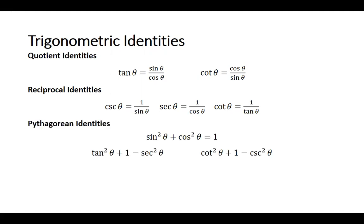The Pythagorean identities — I showed these to you and showed you how they work. The most common one: sine squared theta plus cosine squared theta is equal to 1. Then the ones that might be a little harder to remember — but remember, all of this comes out of the Pythagorean theorem: x squared plus y squared is equal to r squared.